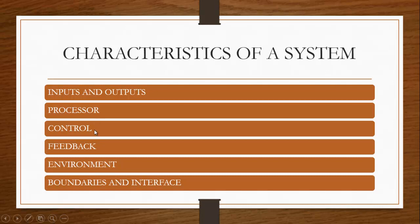Another characteristic is control. The control element guides the system. It is the decision-making subsystem that controls the pattern of activities governing inputs, processing, and outputs. The control element coordinates the behavior of the system in such a way that the input is processed correctly to get the desired output, ensuring that the organization achieves its organizational goals.